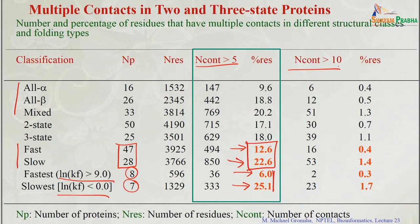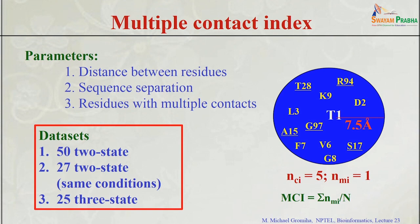Based on this information we can derive a parameter to relate to the folding rate, since we need to quantify. This gives numbers of residues with a threshold of more than 5 contacts, or more than 10 — we can change this number. To quantify, another parameter called the multiple contact index (MCI) has been developed.